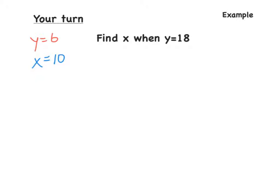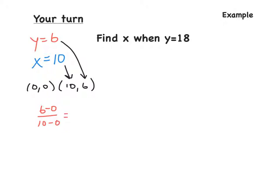Find the slope. We always have two points — we always have (0, 0) and (10, 6). So we have 6 minus 0 over 10 minus 0. That gives us 6 over 10. We must simplify as much as possible. The greatest common factor of 6 and 10 is 2, so if we divide both by 2, we have 3 fifths. So our slope is 3 fifths.